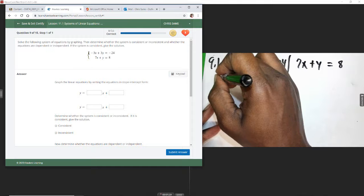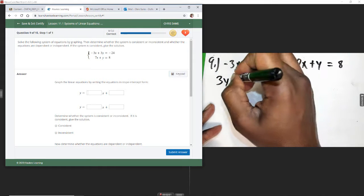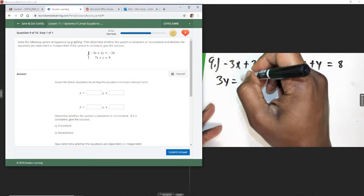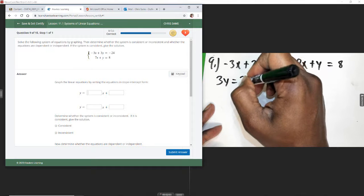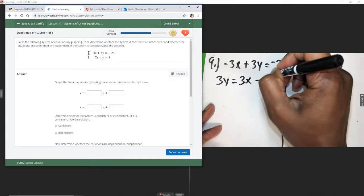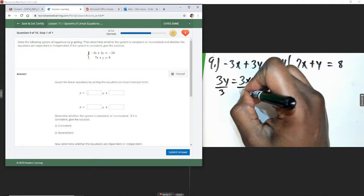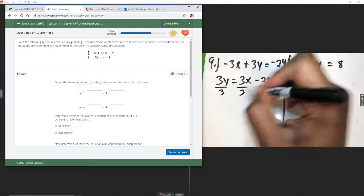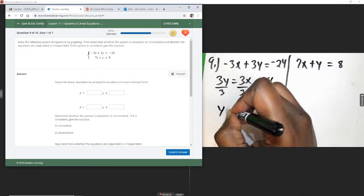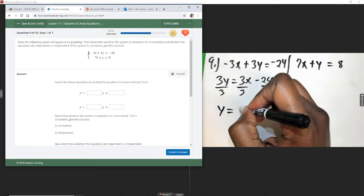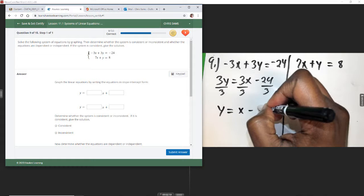All right, move x over, bring down our 3y equals, this will change and become positive this time. So 3x minus 24. Divide everything by 3, and we get y equals x minus 8.